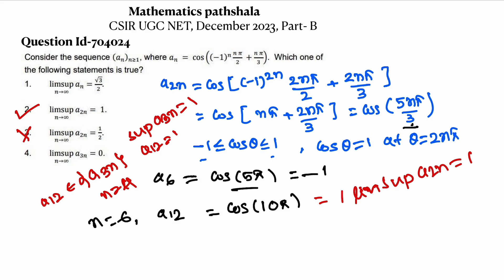So in option 4, what is given? Limit sup of a_3n equals 0. So we get that is 1. So option 4 is also false.